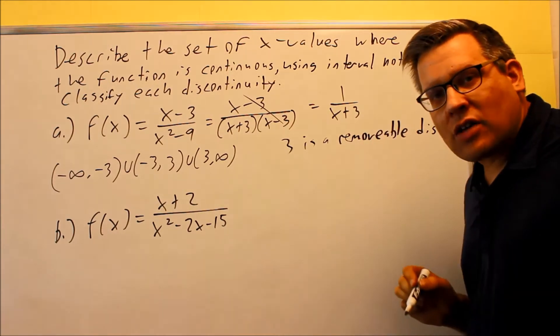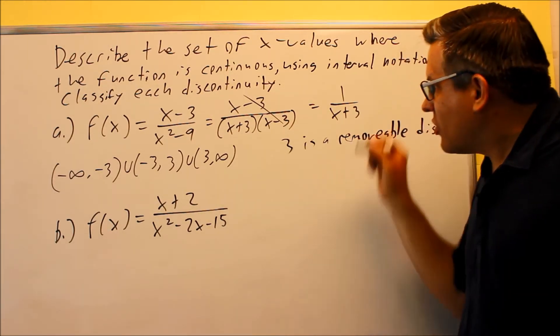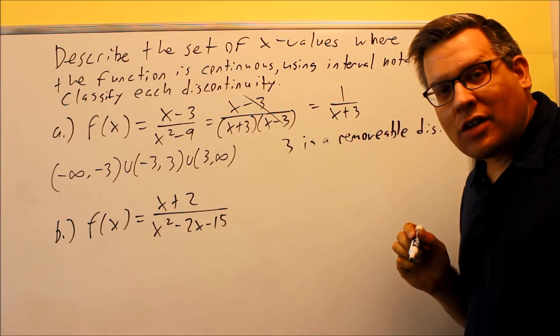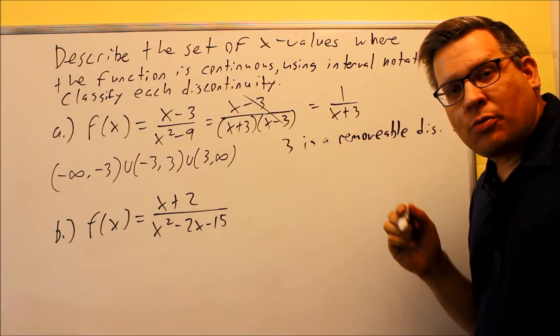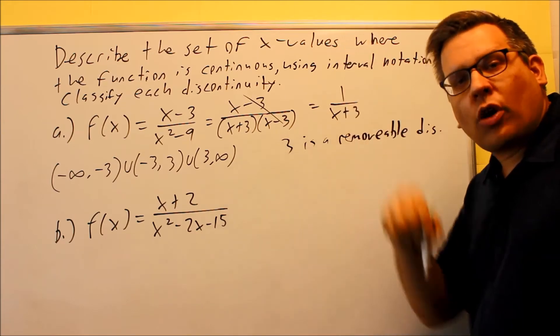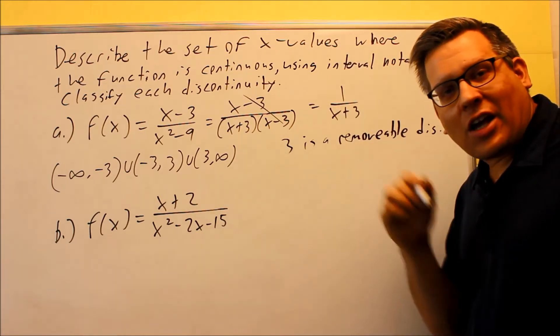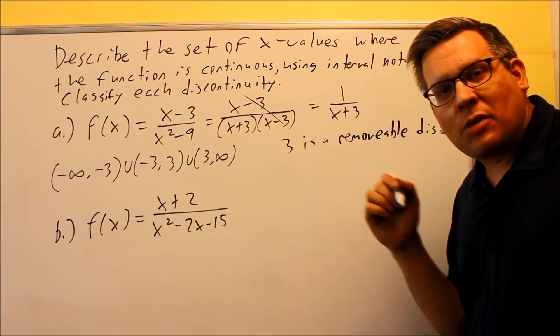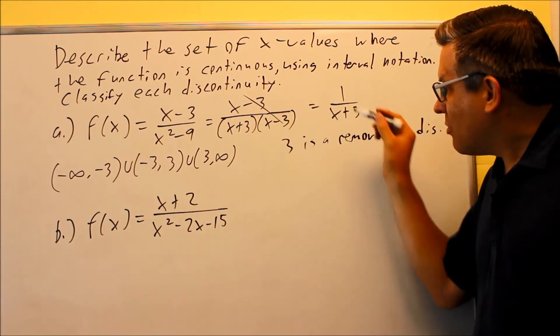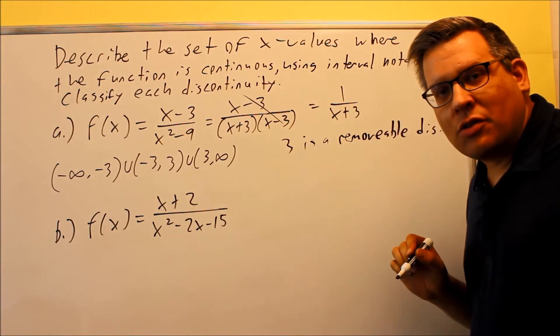Now, no matter what, you're going to have a vertical asymptote at negative 3 and there's nothing that you can do to change that fact. Anytime you have a vertical asymptote, you have one part going up and one part going down. That means that there's a separation in the graph and that can't be filled up by a hole. So anytime you have a vertical asymptote, that's going to be considered a non-removable discontinuity.